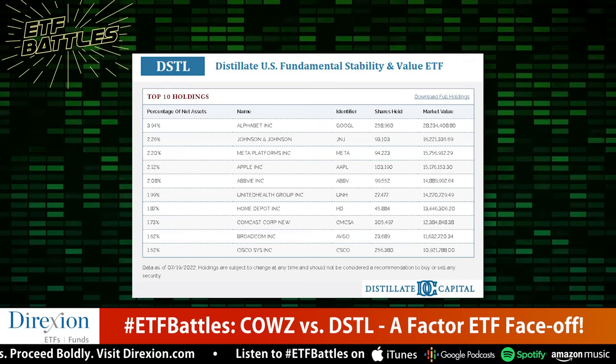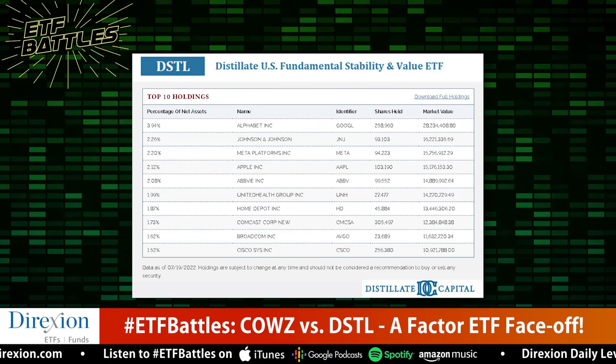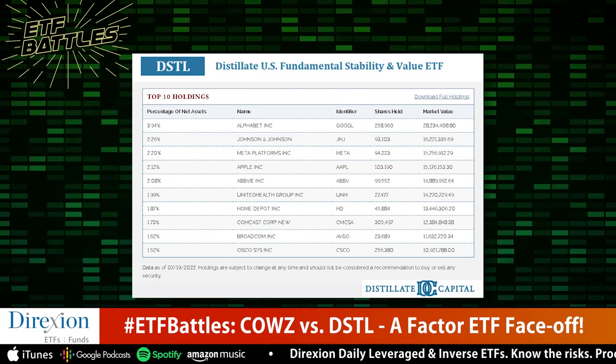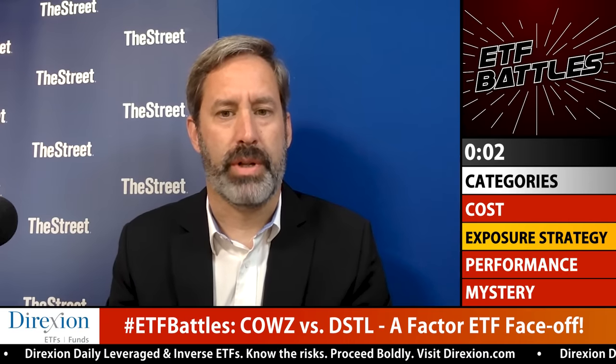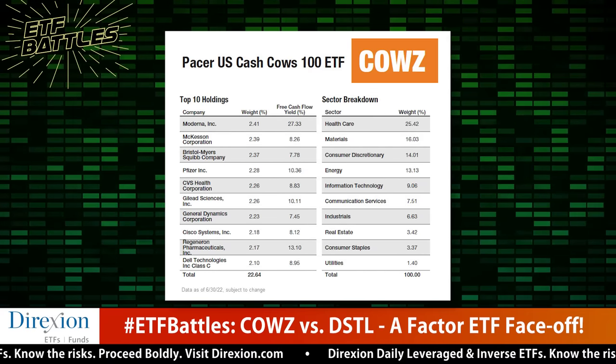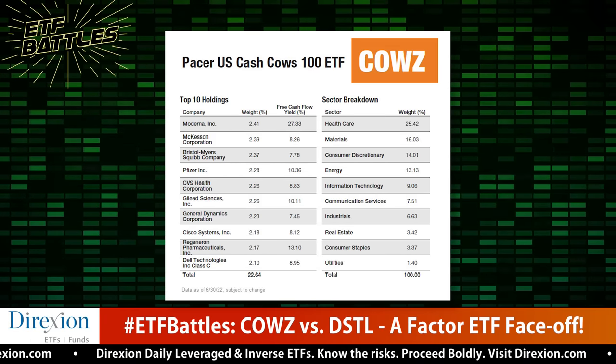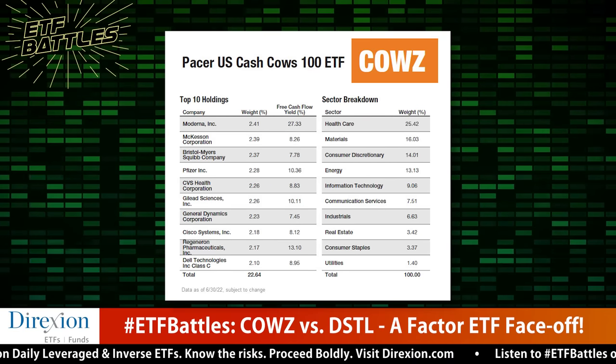I'm pretty much in agreement. I like the fact that DSTL focuses on free cash flow yield as well as several quality metrics, including balance sheet health. It's interesting that even though their strategies are fairly similar, they produce two very different portfolios — there's only about 10% overlap between the two. COWZ is much more heavily tilted towards materials and energy stocks, while DSTL leans more towards industrial and tech names, giving COWZ a more cyclical twist. On how these indexes are structured, I'm going to go with DSTL too.